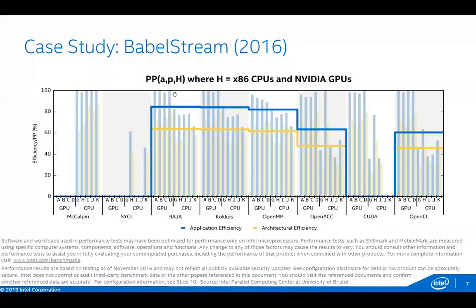Here is a case study using the Babel Stream benchmark developed at the University of Bristol. Babel Stream is essentially McCalpin's stream triad benchmark rewritten in several different languages and frameworks as a means of examining performance portability and computing stream triad bandwidth on platforms McCalpin's code doesn't support. Note this is historical data from 2016 and 2017 — results might differ today due to configuration changes and security patches — but the focus is on trends rather than absolute performance.